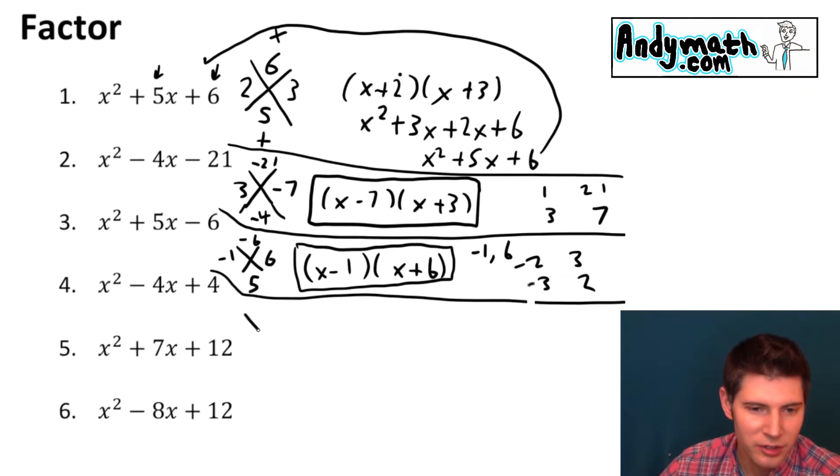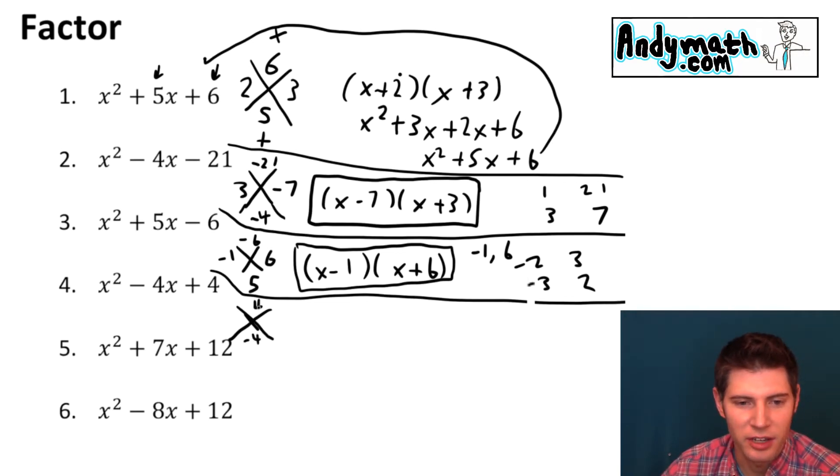Now for number 4 same thing again we'll make our x. We want two numbers that multiply to positive 4 and add to negative 4. So what multiplies to 4? 1 and 4 or 2 and 2?